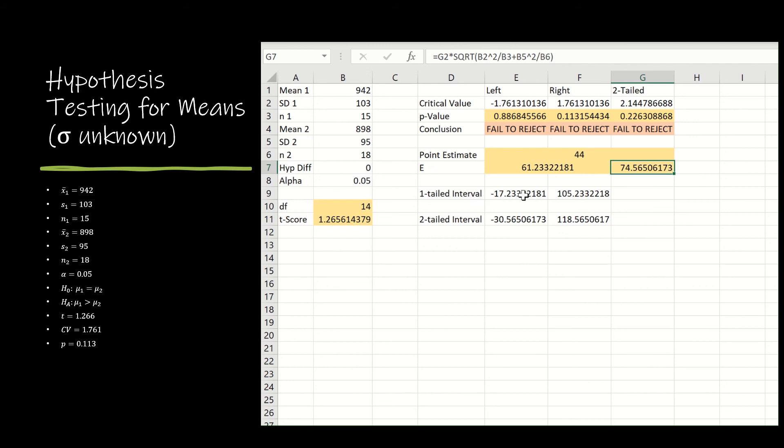And then of course the interval is centered at the point estimate, and I'm either subtracting the one-tailed margin of error and adding the one-tailed margin of error, or subtracting the two-tailed and adding the two-tailed. And if you'll notice, this particular example that we did was a right-tailed test.